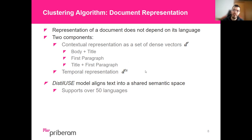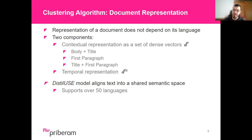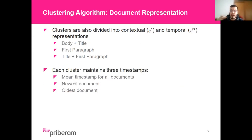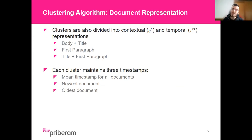For the temporal representation, we follow previous work and use the document's timestamp at the level of the date. When we compare a document's timestamp against a given cluster's timestamp, we compute the Gaussian similarity between the two timestamps. Regarding cluster representation, clusters are also divided into contextual and temporal representations, with each cluster keeping three centroids corresponding to the average of the accepted document representations. Each cluster also maintains three timestamps for the temporal representation: the mean timestamp for all documents, the timestamp for the newest document in the cluster, and the timestamp of the oldest document.